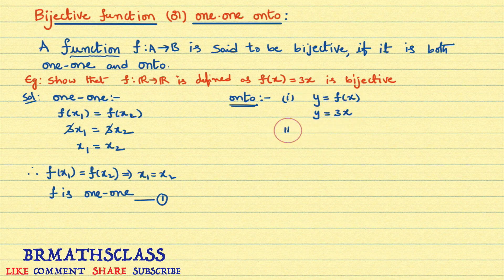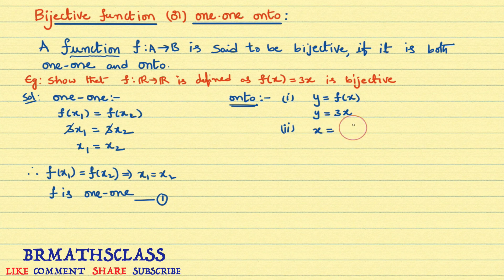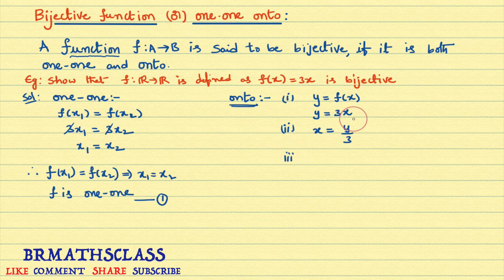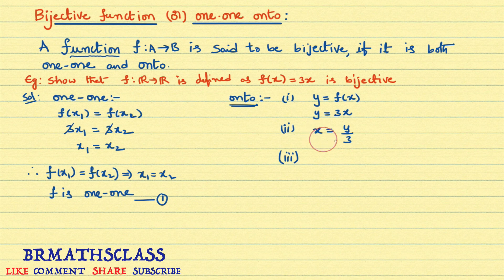Step 2: write x in terms of y. From y = 3x, we get x equal to y divided by 3. Step 3: check that for every y (which is in the codomain set), x is also a real number (which is in the domain set). For any real number y, x is also a real number.